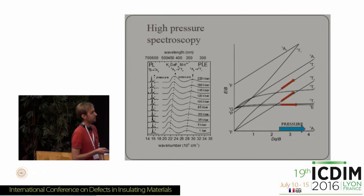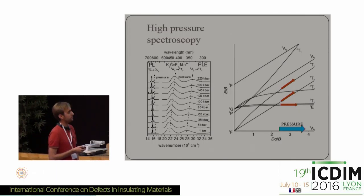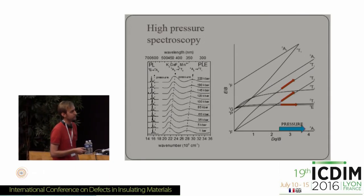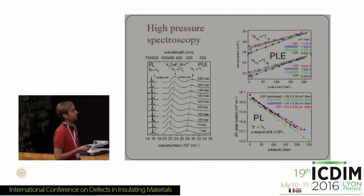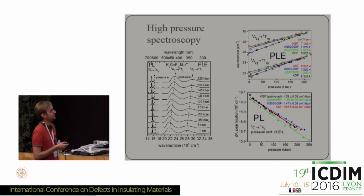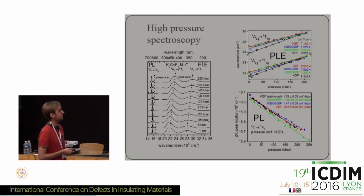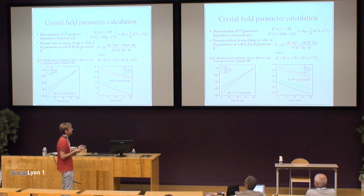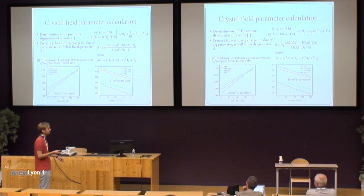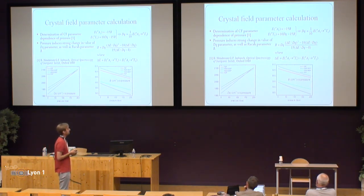From the basic approximate model, when we apply pressure, the energies of the 4T1 and 4T2 states should increase, because decreasing interatomic distances increases the crystal field strength interaction. On the other hand, there should be no real difference in the emission spectra. This is not exactly the case — we see quite strong spectral shifts of the 4T1 and 4T2 states, but we also have a quite noticeable change in the 2E emitting state. This is a result of the assumption that only the crystal field strength parameter changes being incorrect.